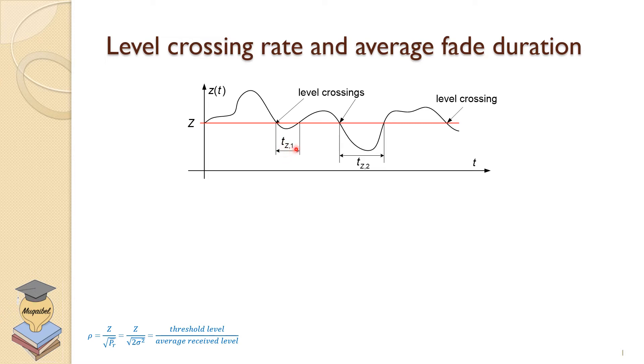For the first time, Tz1, there is a certain duration where we are below the threshold. It goes back, it goes down, Tz2. So this shows the duration for being in fade. This is a fade duration where your signal is not good enough.